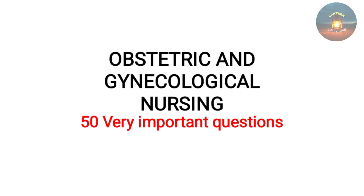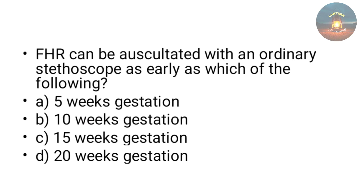So today we are beginning with the questions. The first question is: fetal heart rate can be auscultated with an ordinary stethoscope as early as which of the following — 5 weeks, 10 weeks, 15 weeks, or 20 weeks of gestation? The answer is 20 weeks of gestation.